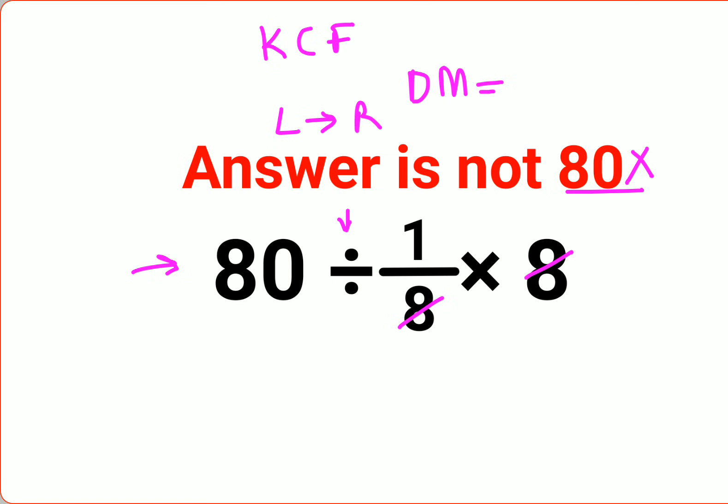The first operation on your left-hand side has to be done first. So now let's see, over here we have 80 ÷ 1/8.